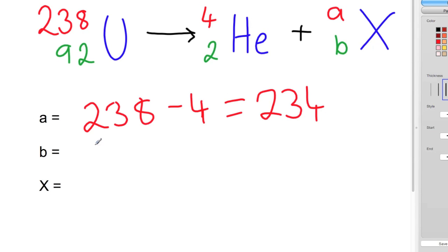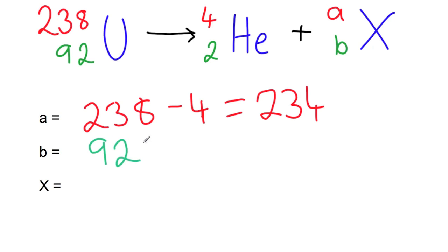So looking at the atomic number, uranium is 92, so B must be equal to 92 minus 2. So that will give us 90.